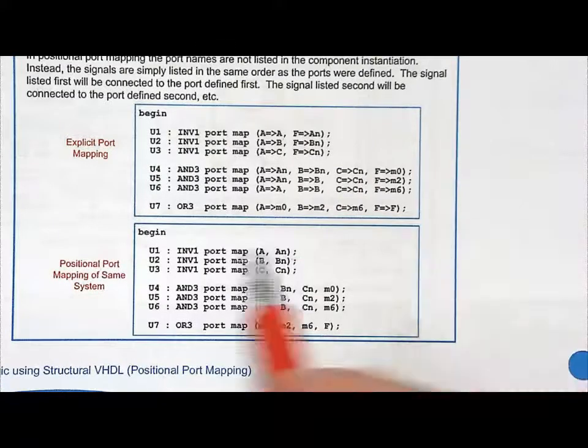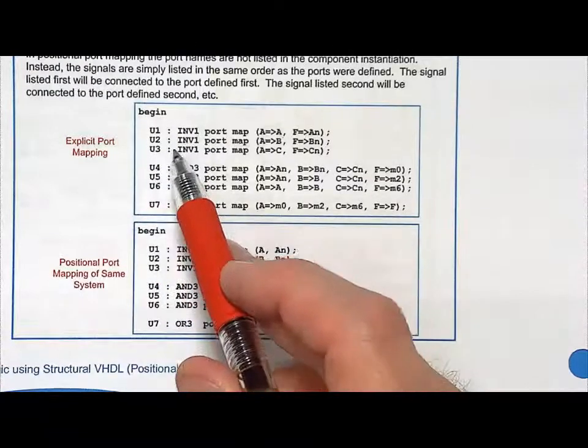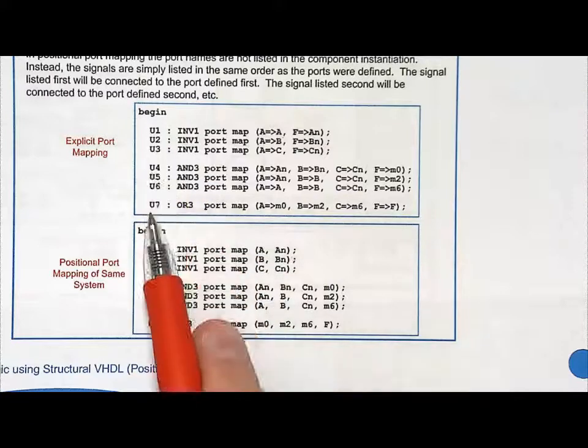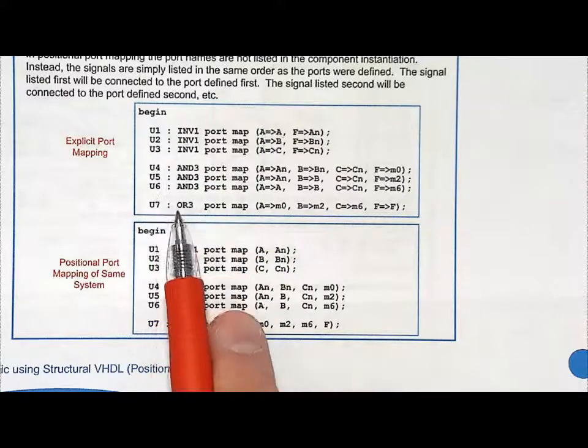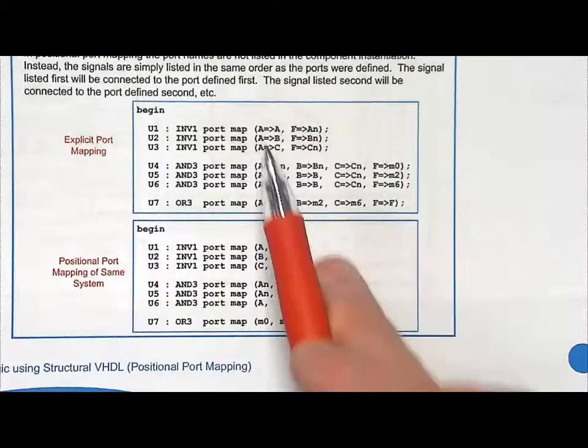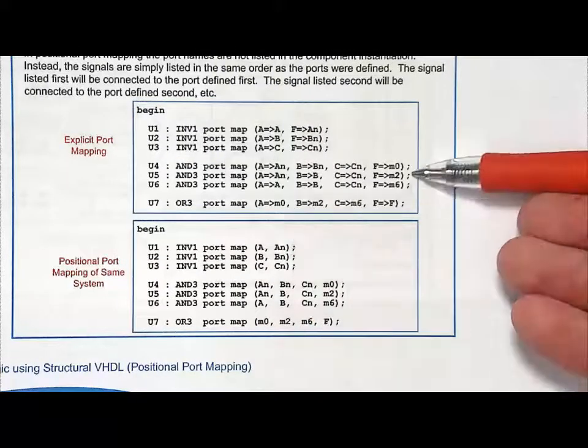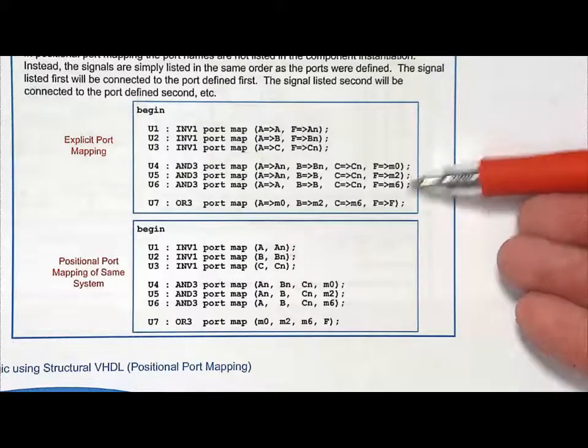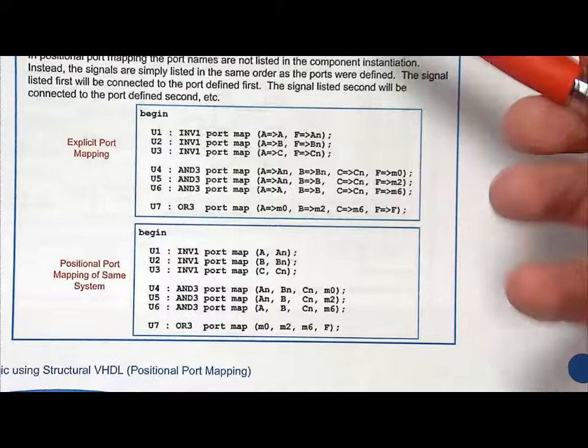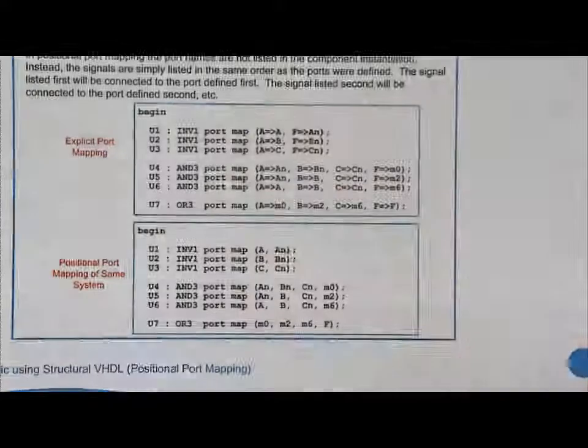And one last comment on this is this is considered concurrent because each of these components are treated as if they are independent parallel executed subsystems. So this is actually officially at this level, it's concurrent. Now we don't know what's beneath it. The behavior beneath it might not be concurrent. In this example, it of course was. However, these are all treated as concurrent executed components.